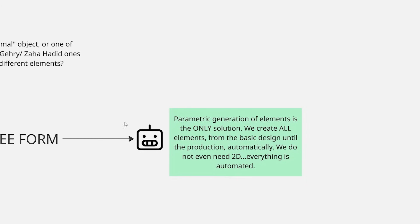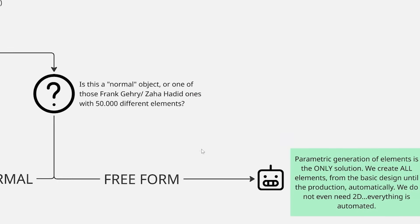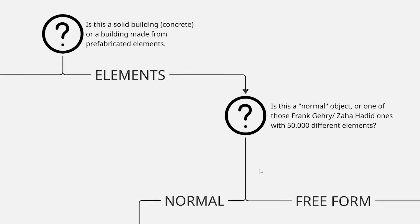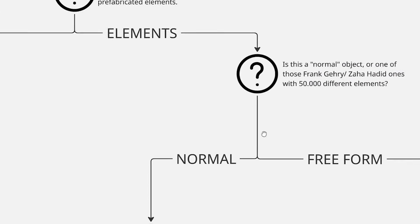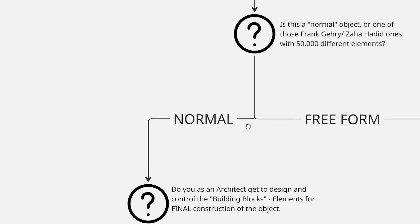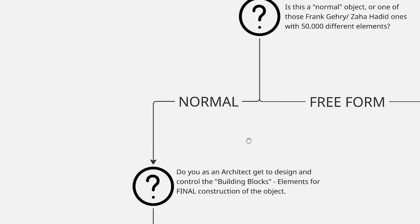So let's follow the graph further and say that you do not have a freeform object — most likely you won't, because that's a very small percentage of architecture. You have a normal, standard, orthogonal project or similar.